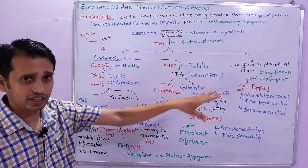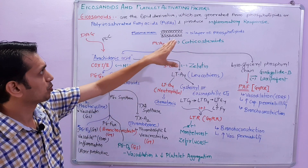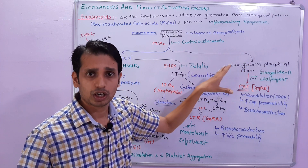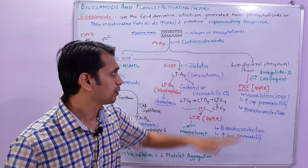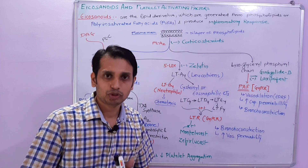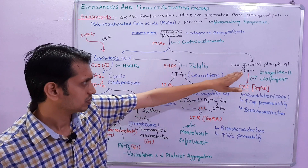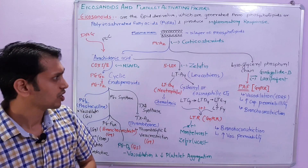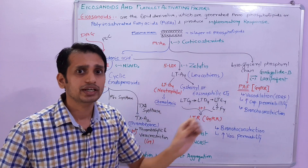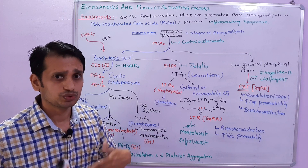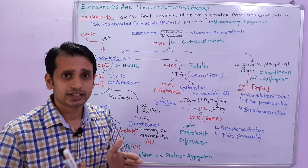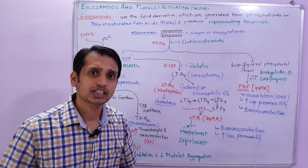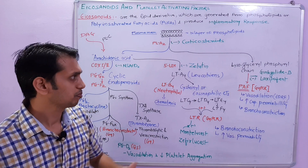First, we should talk about the platelet activating factors. As we can see in this image, the phospholipid bilayers of the plasma membrane convert into the lysoglyceryl phosphoryl chain, and then further it converts into PAF, means platelet activating factor. Platelet activating factor mainly acts by the GQ-PCR, causes nitric oxide vasodilating effect due to EDRF, increases capillary permeability, and causes bronchial constriction.